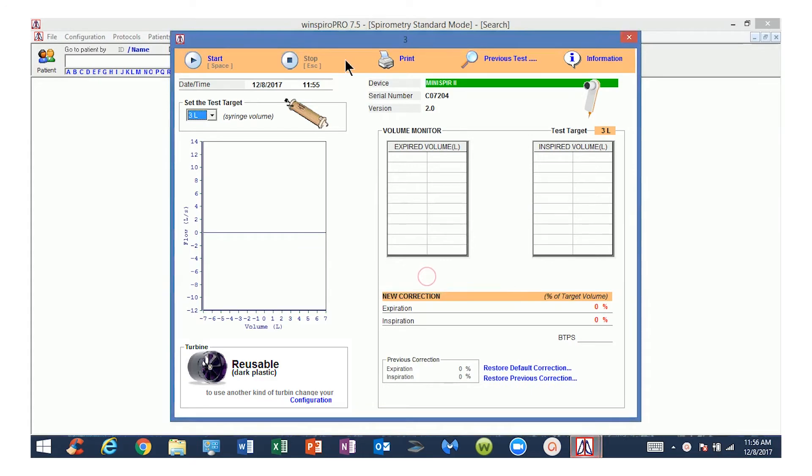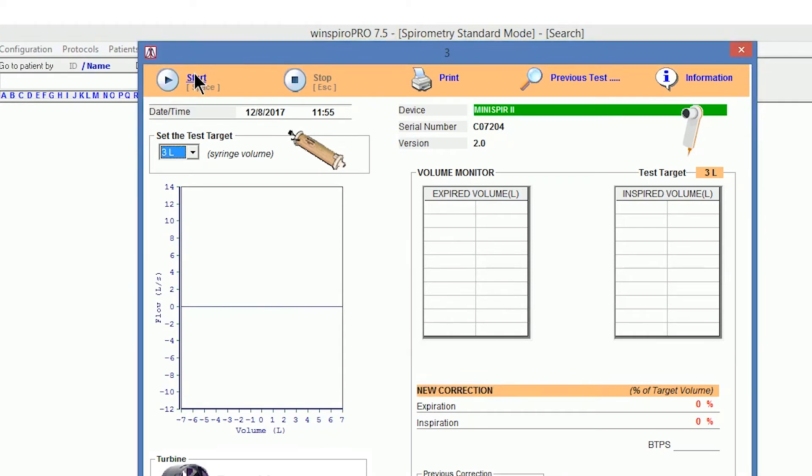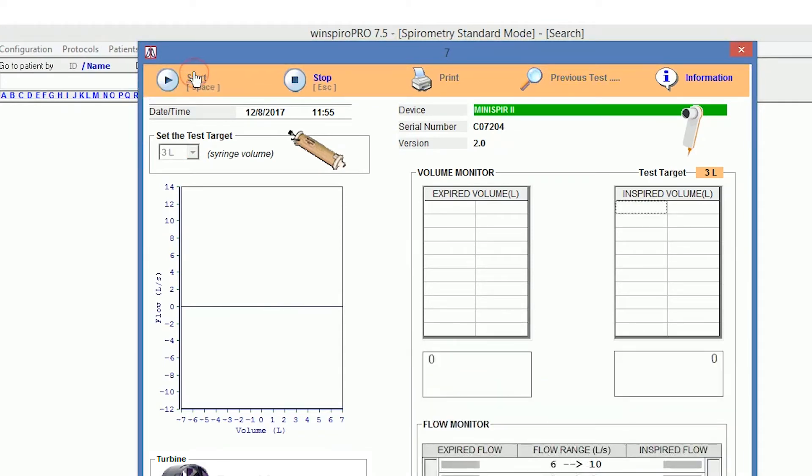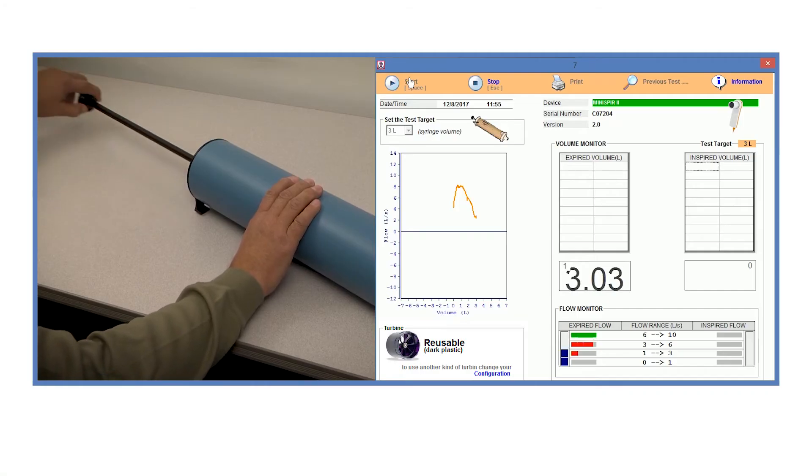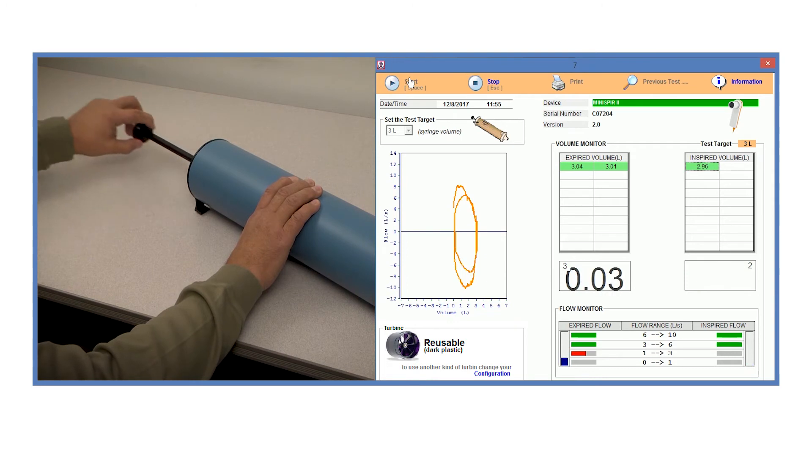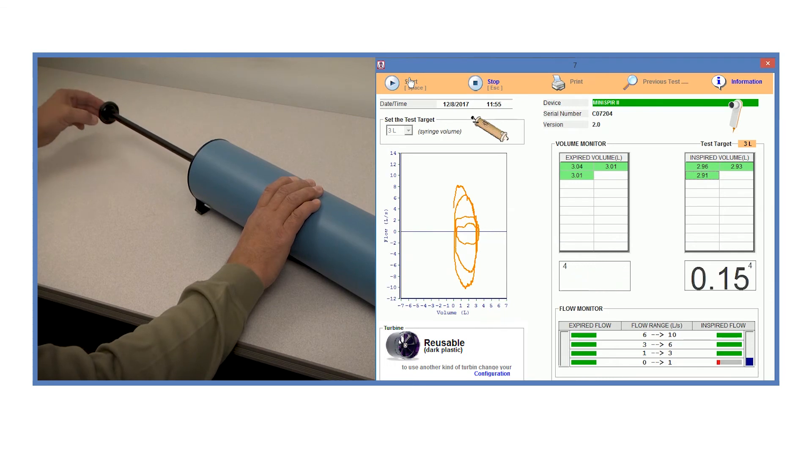You may begin the test by pressing the space bar on the computer or clicking the Start icon at the top of the screen. Begin to push the syringe piston in and out smoothly at three different speeds: fast, medium, and slow, until all the bars under the Expired Flow and Inspired Flow are green. Be sure to pull and push the syringe piston all the way to the built-in stops in each direction.